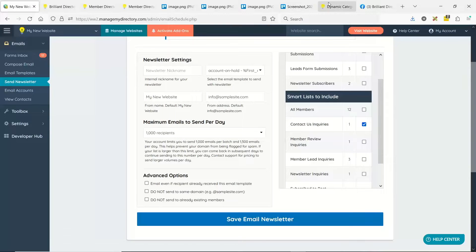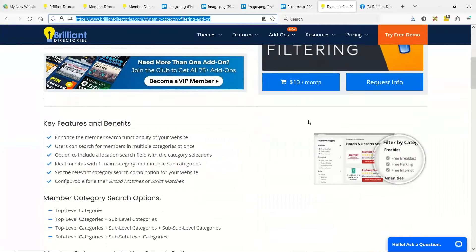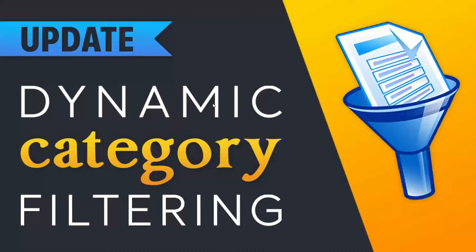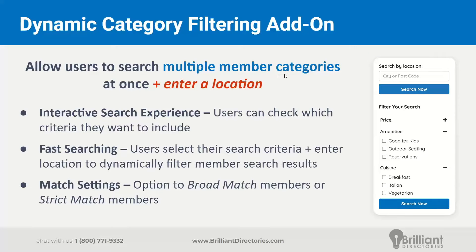It expands the functionality a bit. We'll go over what the Dynamic Category Filtering add-on actually is. It's a different search module for members — specifically member categories — that you can place in the sidebar on your member search results page. Users of the website will be able to check off multiple member categories that they want to filter through, rather than using the default sidebar search module where they only select one category at a time from a drop-down list.